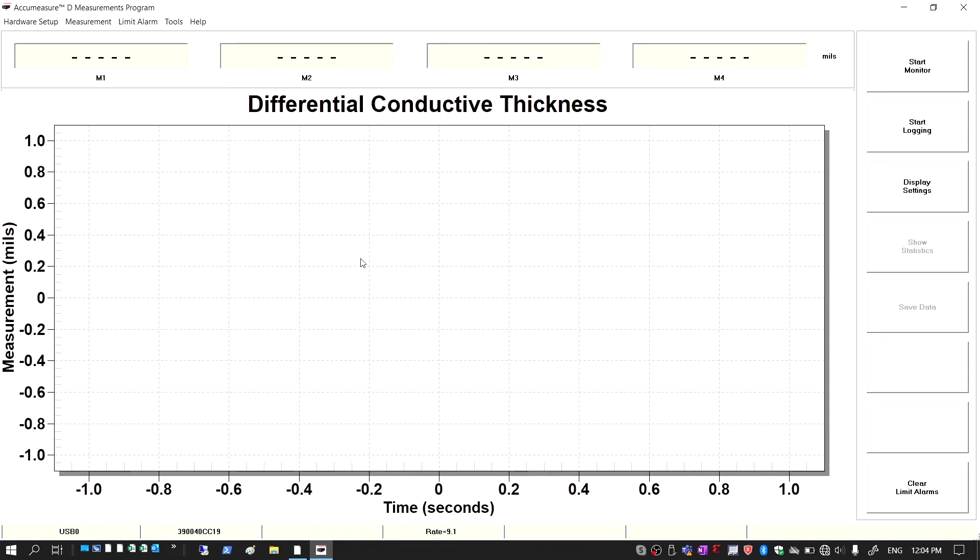And now the probes are set for 1x range. So we're going to change that to 4x range, because the gap that we have between the two probes is an eighth of an inch, so we need to extend the range.